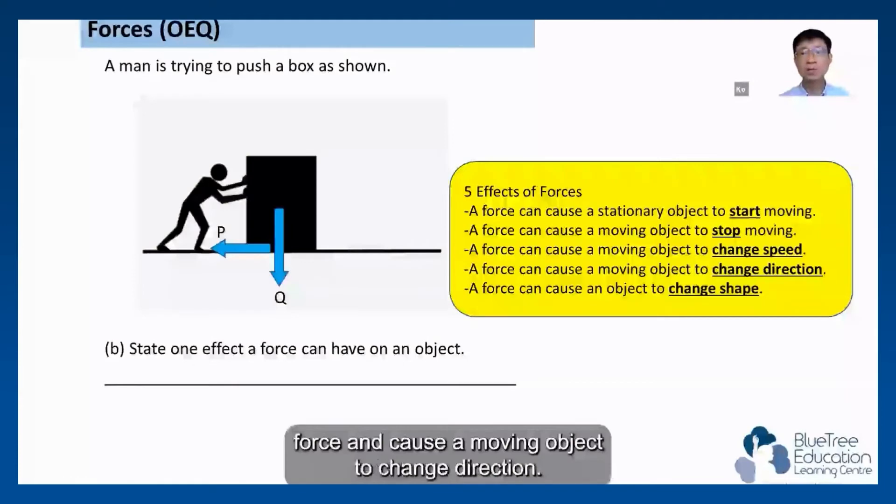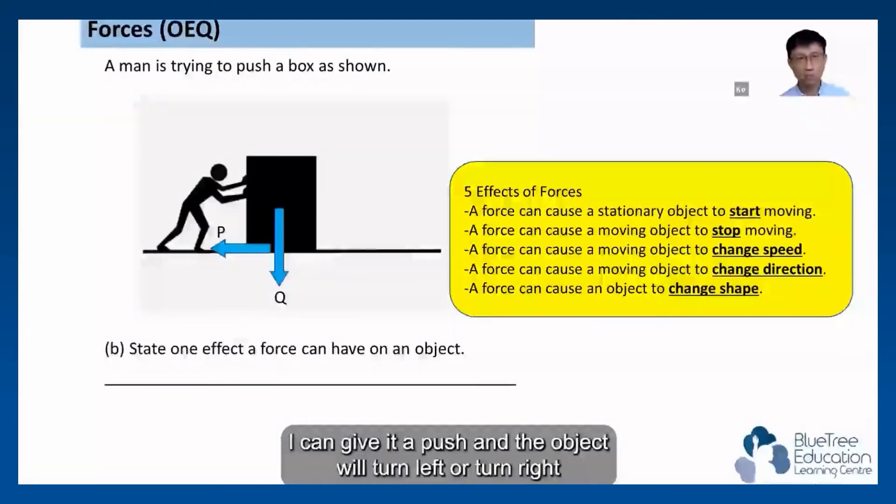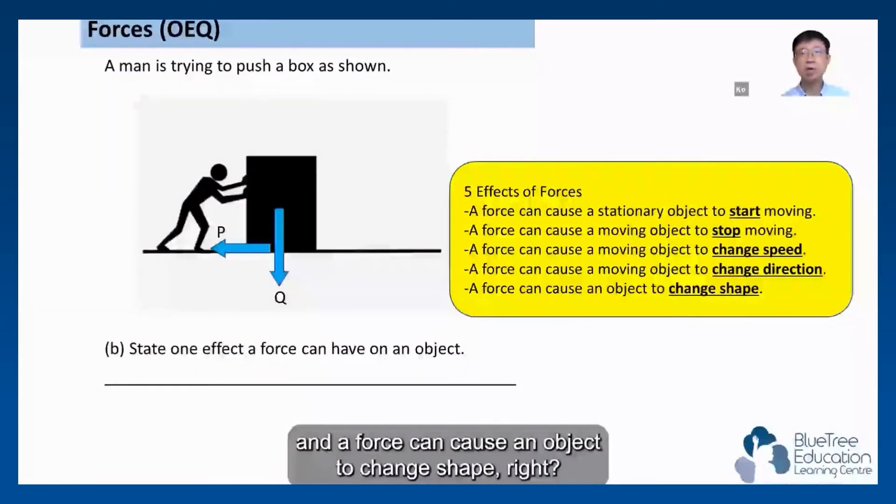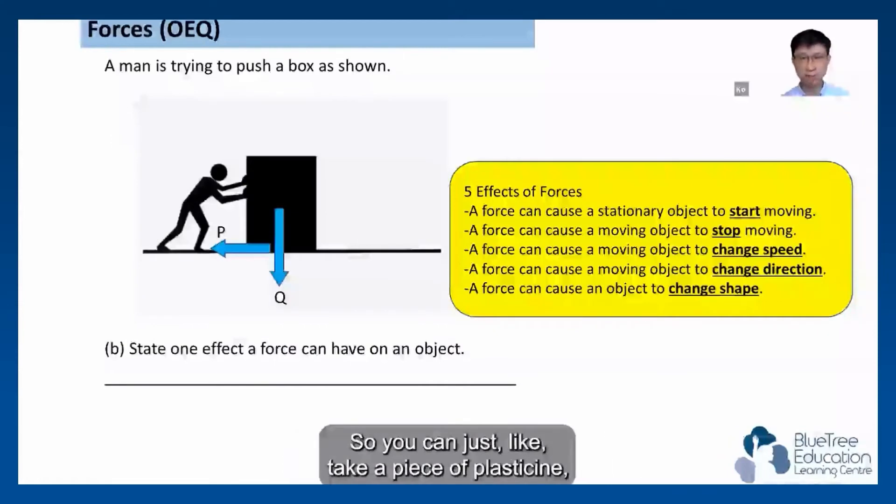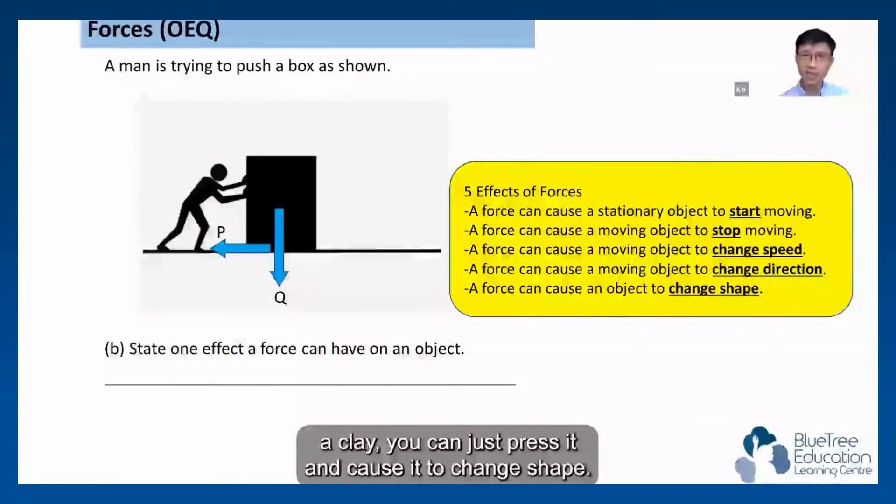Number four, a force can cause a moving object to change direction. I can give you a push and the object will turn left or turn right. And the force can cause an object to change shape. So if you take a piece of plasticine, a clay, you can just press it and cause it to change shape.